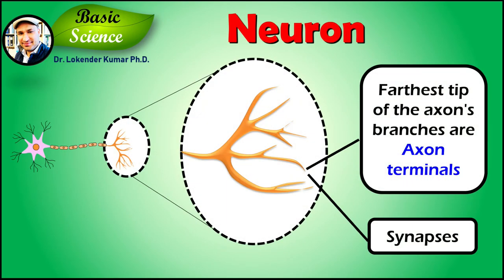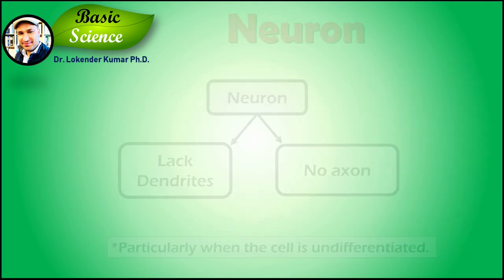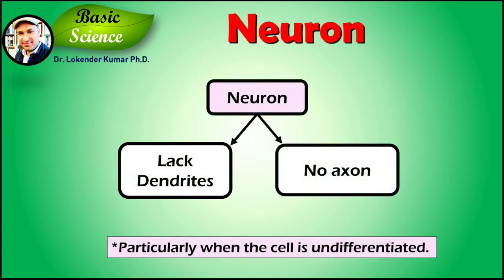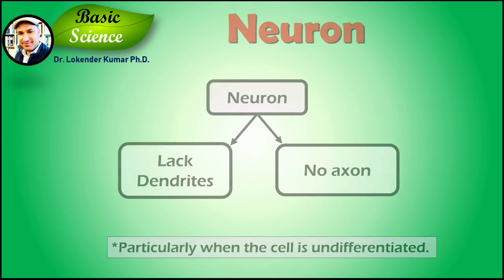Now let's discuss some of the important features of axons. At the tip of the axons, branches are axon terminals where the neurons can transmit a signal across the synapse to another cell. It's important to note that neurons may lack dendrites or have no axon. The term neurite is used to describe either a dendrite or an axon, particularly when the cell is undifferentiated.